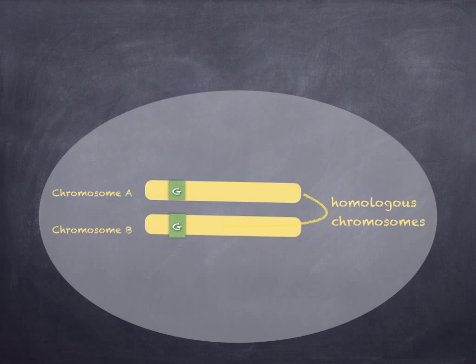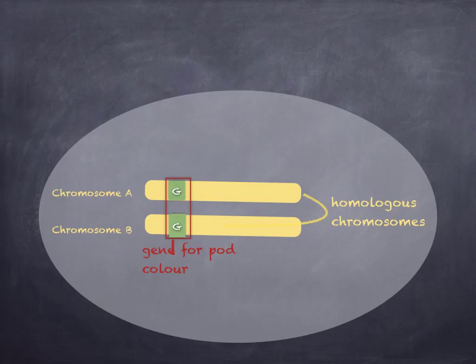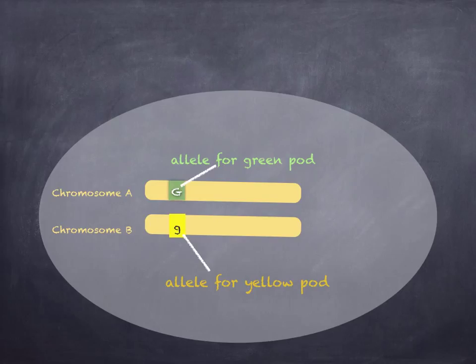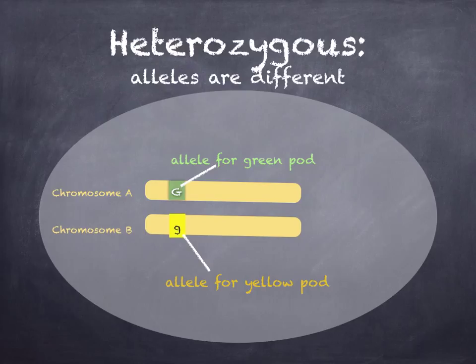Moving on to heterozygous and homozygous. In sexually reproducing organisms, the chromosomes occur in pairs called homologous chromosomes. There are therefore two loci that can each carry one allele of a gene. If the allele on each chromosome is the same, then the organism is homozygous for the characteristic — for example, green-green for pod color. If the two alleles are different, for example an allele for green pod and an allele for yellow pod, we say that the organism is heterozygous for that characteristic.